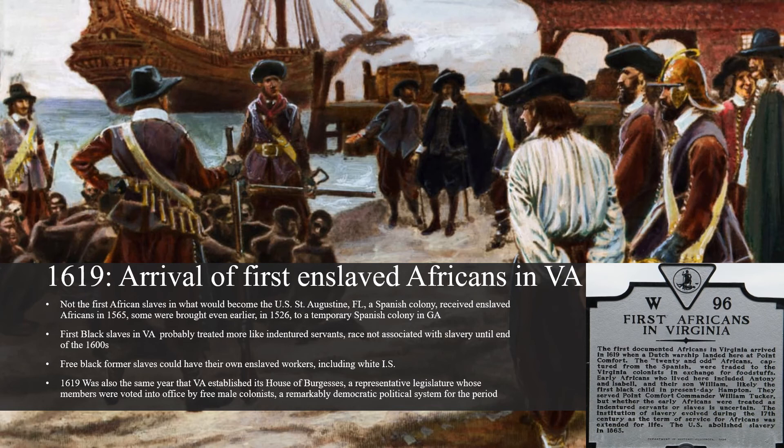Early on in Virginia, slavery was primarily not race-based — with blacks as slaves and white Europeans as masters who would buy and sell African people as if they were property for a lifetime investment. The race-based chattel enslavement that we think of today would not develop in Virginia and the rest of North America until the end of the 1600s. We will discuss what caused this transition in a future video.